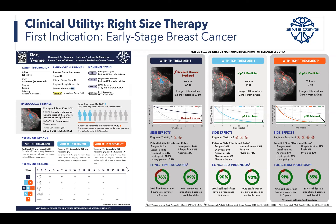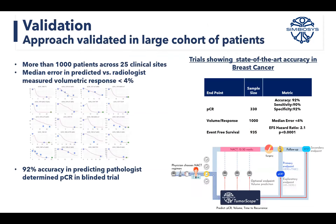We've been working with a number of sites, running studies to validate how accurate our predictions are. Over 1,000 patients have been validated with the application. Predicting multiple endpoints of pathological complete response, we see an accuracy of over 92%, and we can predict volume and how the tumor shrinks.